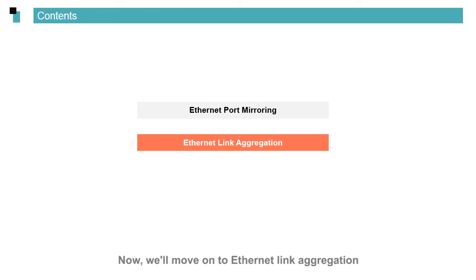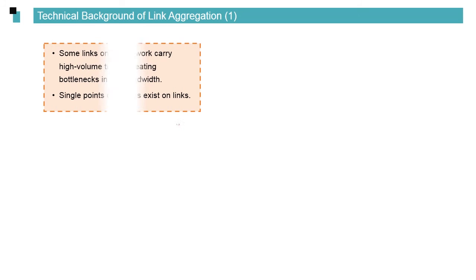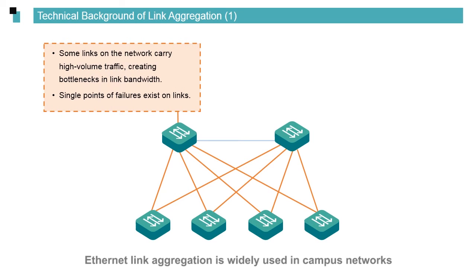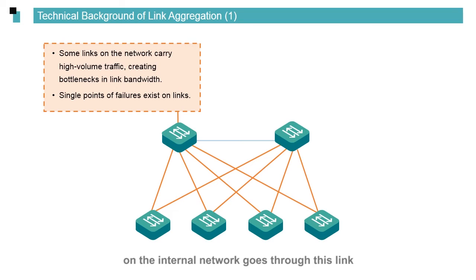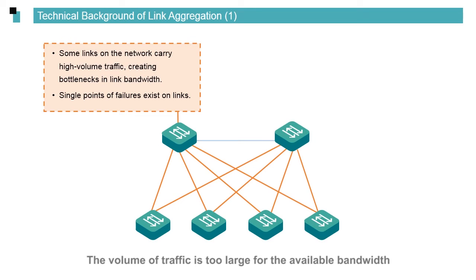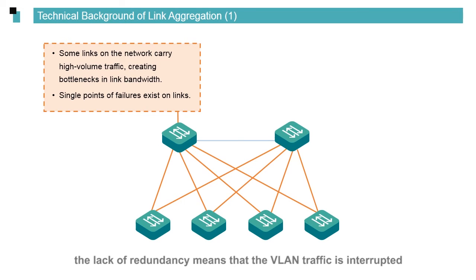Now we'll move on to Ethernet link aggregation, which is widely used in campus networks. In this topology, the link between two core switches is essential — the traffic between the VLANs on the internal network goes through this link. There are two main challenges: the first is on bandwidth, where the volume of traffic is too large for the available bandwidth; the second is on redundancy, where if the link becomes faulty, the lack of redundancy means that the VLAN traffic is interrupted.